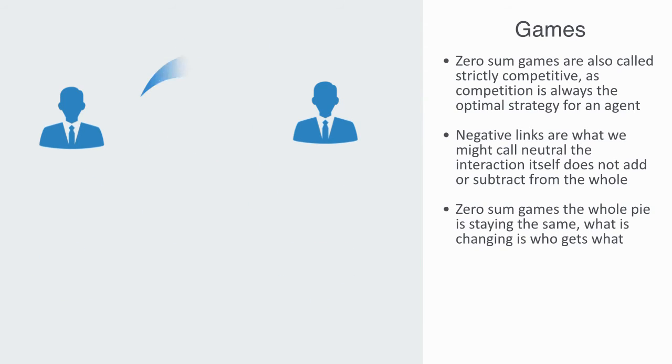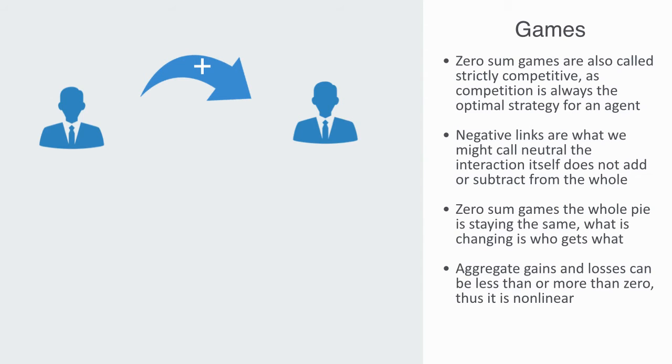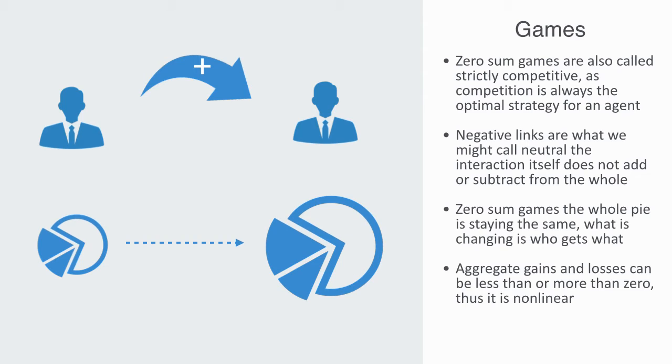In contrast, positive links define non-zero-sum games. A non-zero-sum game is a situation in which the interacting party's aggregate gains and losses can be less than or more than zero. Thus, it is non-linear. Through positive links, the whole pie that is being divided up between agents can grow or diminish. That is to say, the interaction is not neutral. The interaction itself is adding or subtracting something from the whole pie. So we need to understand how that's happening.